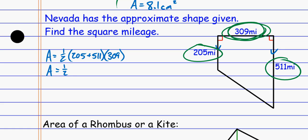Following order of operations, inside these parentheses, the 205 plus the 511 is 716. Now on my calculator, it's one half times the 716 times the 309. So I get an approximate area of 110,622, and that's square miles this time.